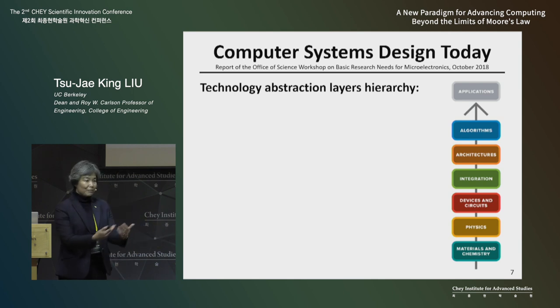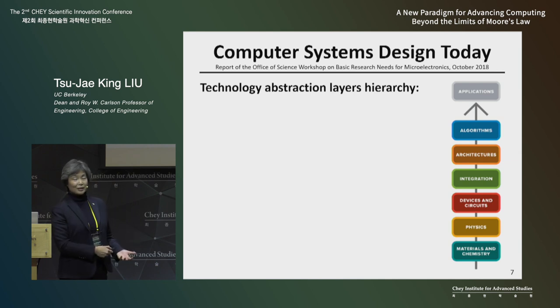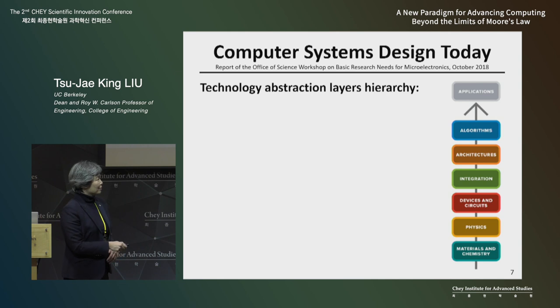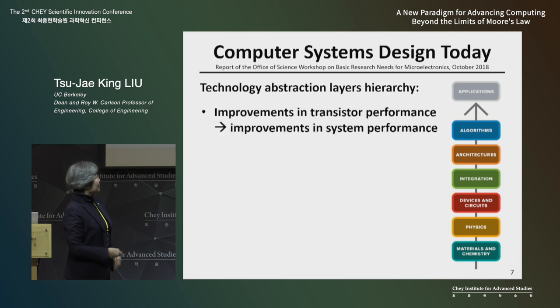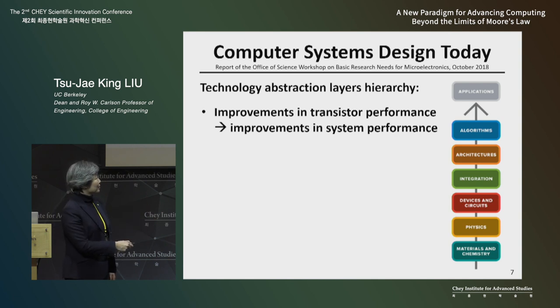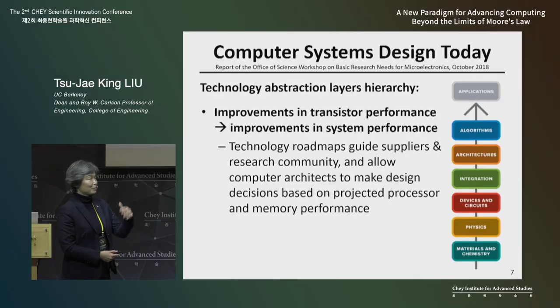We have experts in materials, experts in transistor design, experts in circuit design and computer architects, and also software engineers who work in their own layers. Basically, what the industry has done is: we know that we can continue to follow Moore's Law to have improvements in transistor performance, so the people who design the architectures and the algorithms just count on that steady progress.